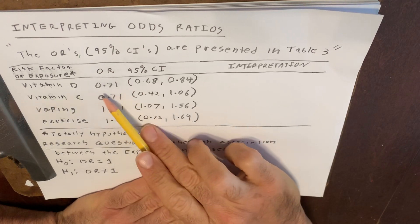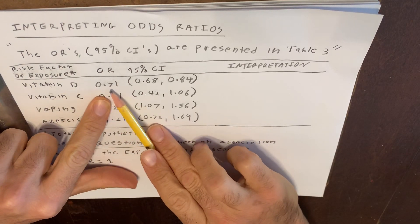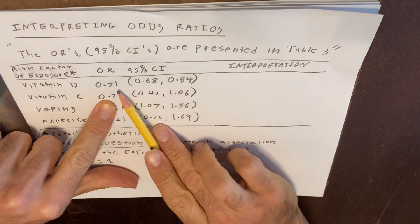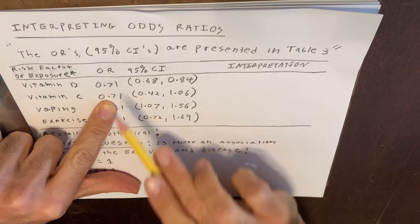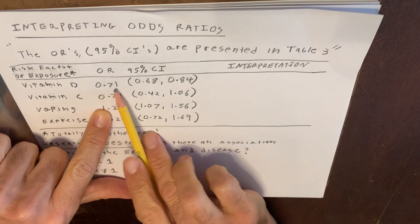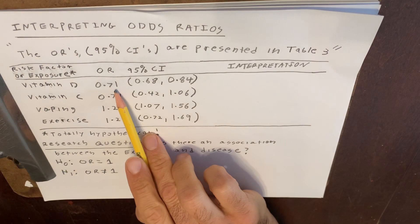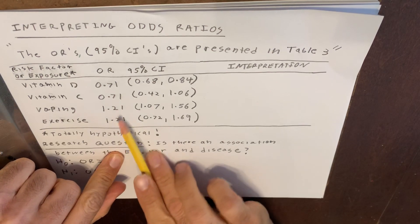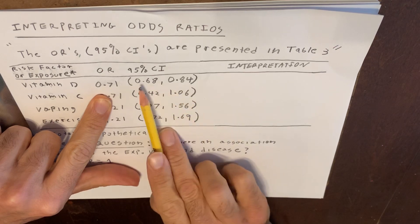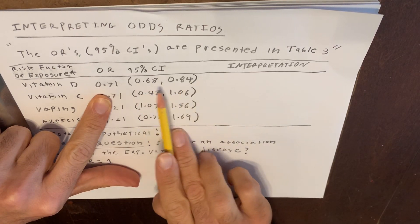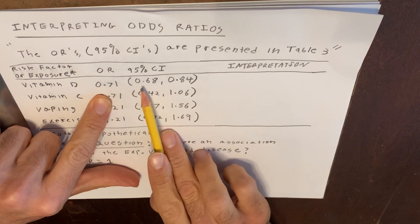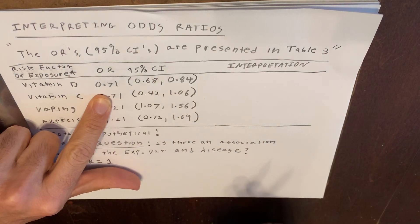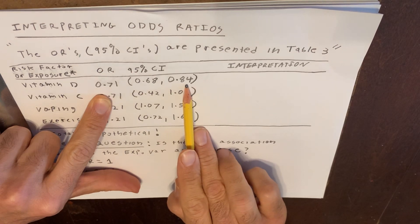Here we have an odds ratio observed to be 0.71. I want you to notice that this odds ratio is less than 1, which suggests that vitamin D could be protective against getting this disease. But we need to see whether this is statistically significant — less than 1 would be protective, greater than 1 would be a risk factor. We look at both bounds of this 95% confidence interval: the lower bound is 0.68, and the upper bound is 0.84.